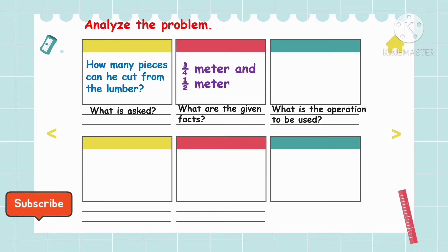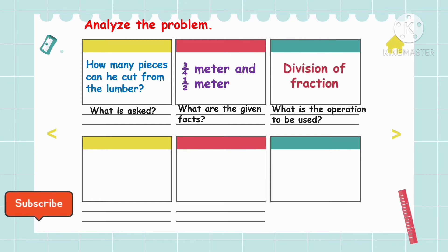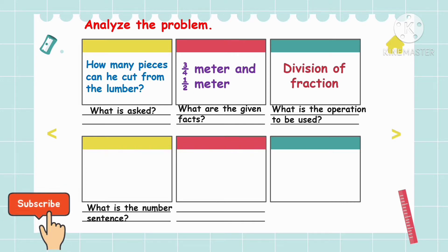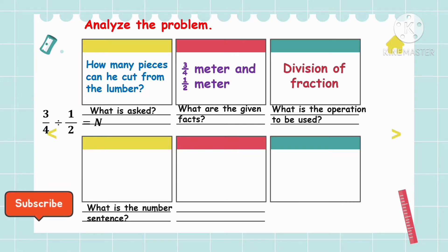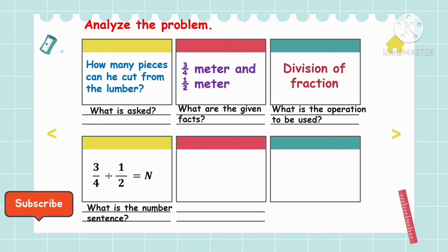Then what is the operation to be used? First, we're going to use division of fractions. What is the number sentence? The number sentence is 3/4 divided by 1/2 is equal to n.